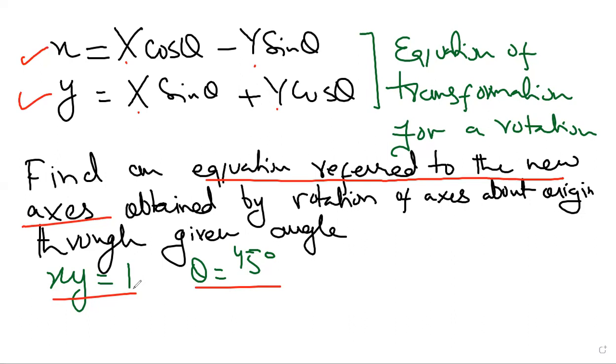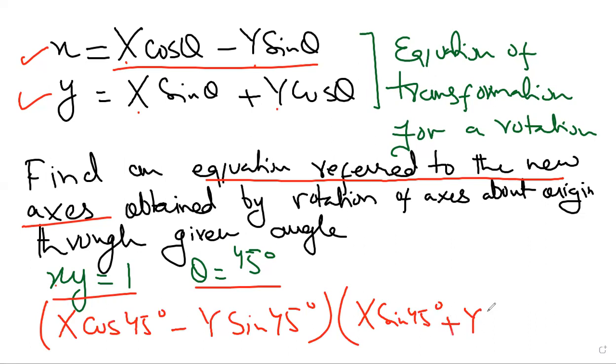I'm writing the coordinates. x is this one: x cos 45° minus y sin 45°. y is x sin 45° plus y cos 45° is equal to 1.